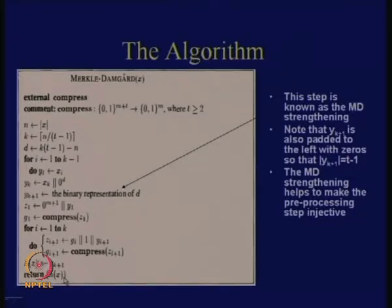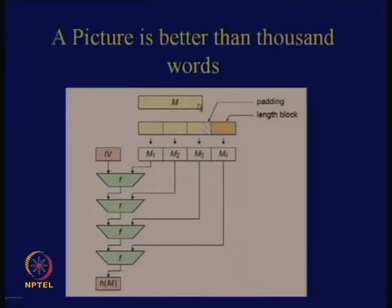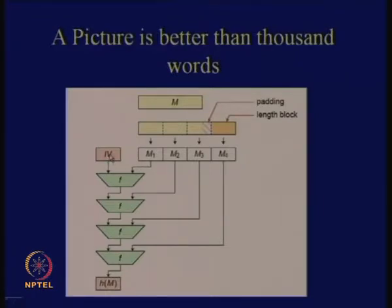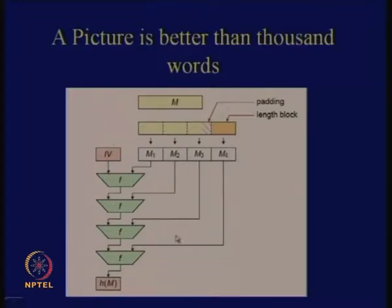Diagrammatically, you take the input, do additional padding for the k-th block, add the length block y_{k+1}, and then take m₁, m₂, m₃ and so on with the IV value. Feed to the compress function, obtain an m-bit output, take the next t−1 bits with a 1 in between, and continue to obtain the corresponding hash value. All hash functions like SHA, MD5, and MD4 follow this principle.